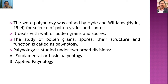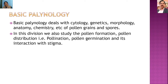For the study of palynology we have categorized it into two categories: first, fundamental or basic palynology, and second, applied palynology. In basic palynology we study the cytology, genetics, morphology, anatomy, chemistry, biochemistry, and other properties of pollen grains and spores. We also study how pollen grains are formed, how they are distributed through the process of pollination, germination of pollen grains, their interactions with the stigma, and how they fertilize the egg nucleus.